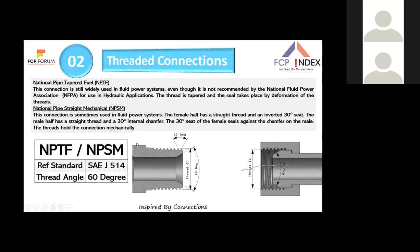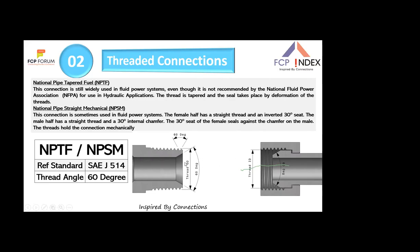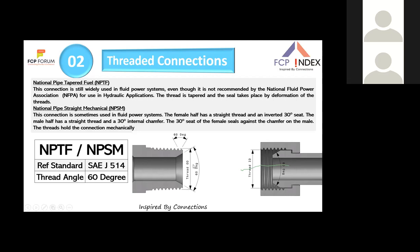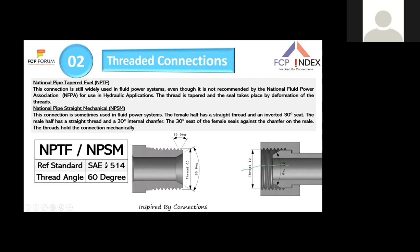NPSM — National Pipe Straight Mechanical — is sometimes used in fluid power systems. The female half has a straight thread with an inverted 30-degree seat, and the male half has a straight thread and a 30-degree external nose. The 30-degree seat of the female seals against the nose on the male, holding the connection mechanically. The standard is SAE J514.